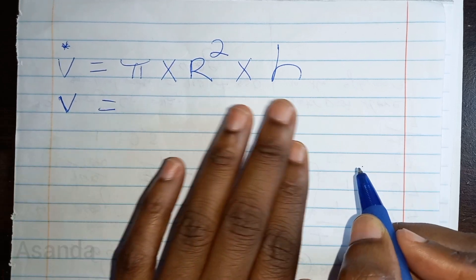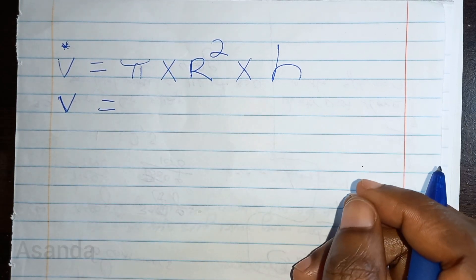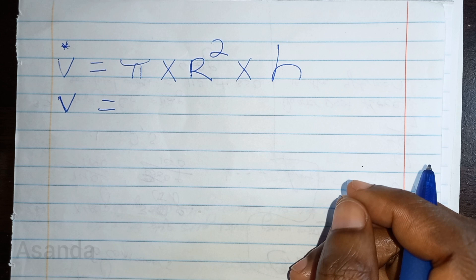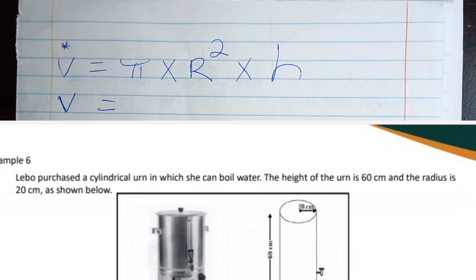Before I substitute, I'm going to check if all my units of measurement are the same. They said my radius is 20 centimeters and my height is 60 centimeters.